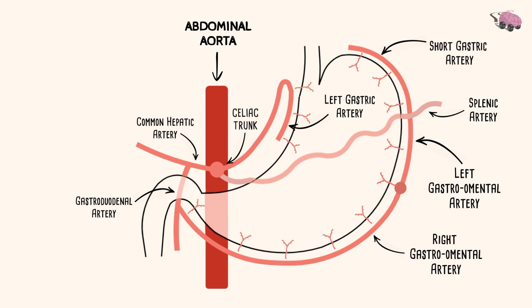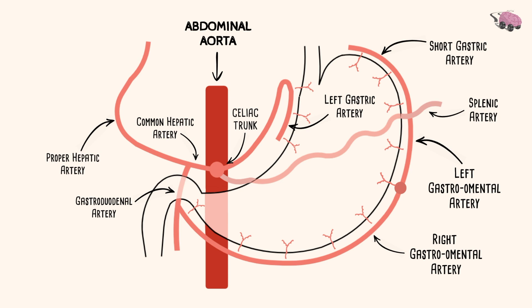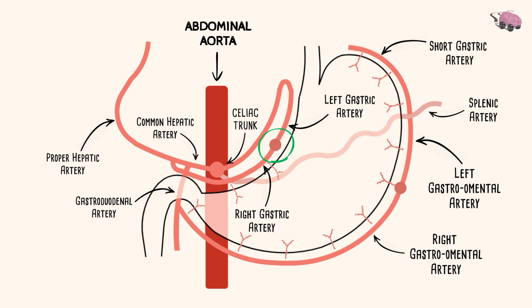From the common hepatic artery, we have a branch called the proper hepatic artery going towards the liver. From the proper hepatic, we have our last artery to the stomach called the right gastric artery. It meets with the left gastric artery along the lesser curvature.